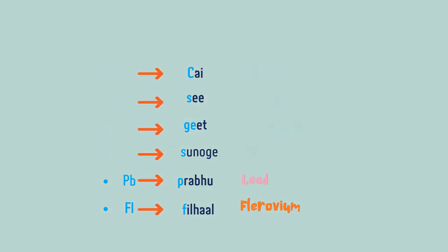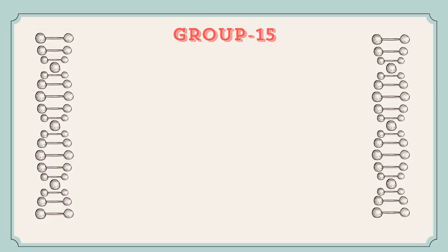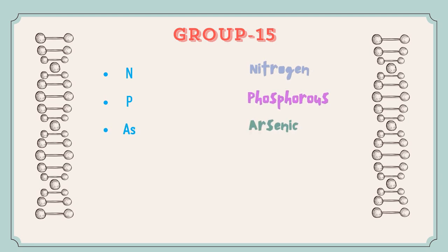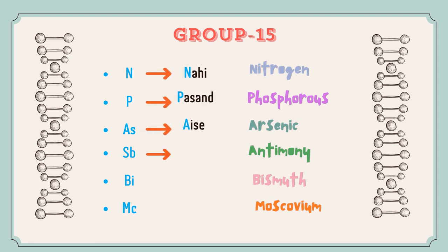Let's move on to the next group, which is Group 15, also known as the Nitrogen family. The elements are Nitrogen, Phosphorus, Arsenic, Antimony, Bismuth, and Moscovium. The trick for this group is: 'Nahi Pasand Aise Sab Bhai Mujhe' — quite interesting!